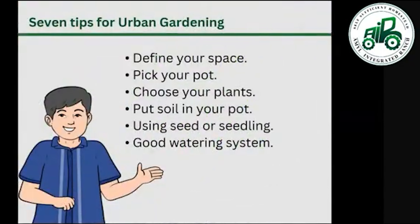Seven tips for urban gardening: first, define your space; pick your path; choose the plant you are going to grow; put soil in your path using a good source of soil media; use seed or seedling; and of course a good watering system is very important.